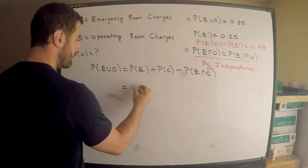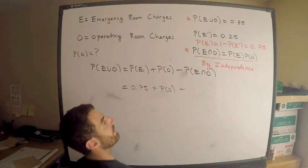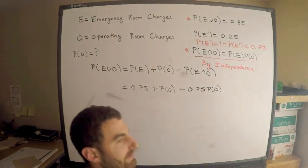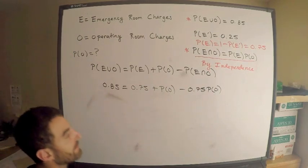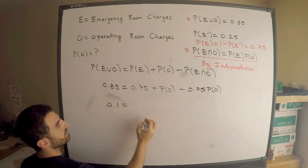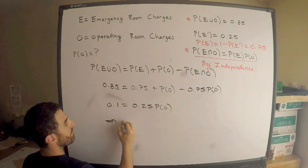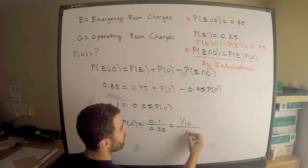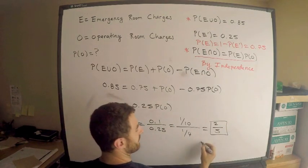So probability E is 0.75, plus the unknown probability O, minus — since we have independence — we can break this up: 0.75 times probability O. The left-hand side was given as 0.85. This is a linear equation in the unknown probability O. Doing the algebra: 0.1 equals probability O minus 0.75 times probability O, which is 0.25 times probability O. So probability of O equals 0.1 over 0.25, which is 1 tenth over 1 fourth, which equals 4 tenths, or 2 fifths, which is 0.4.